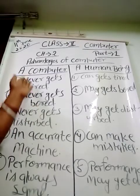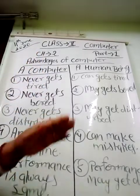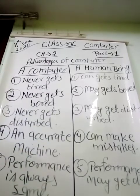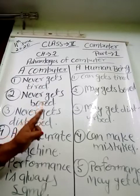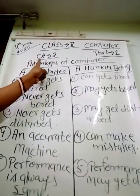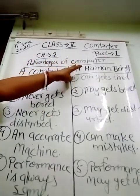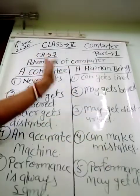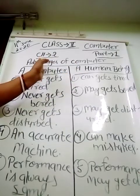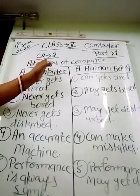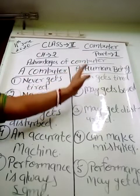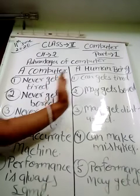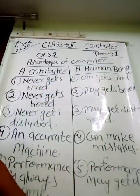So these are the advantages of computer. In the next class, I am going to explain about the disadvantages of computer. There are two sides we have to learn about. First, advantages of computer — what are the good things of computer in comparison with a human being? And in the next video, I am going to explain about the disadvantages of a computer — what are the bad sides of the computer, in comparison with a human being.